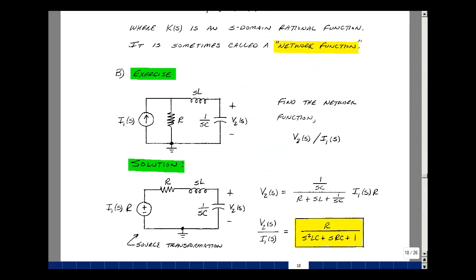Take a look at an example. Let's find the network function v2 over i1 of s for the circuit in the S domain. Lots of ways we could do that. Let's do a source transformation. I'll convert this into a voltage source whose value is i1 of s times r, with the plus sign pointing towards the top and the minus on the bottom, and then having a series resistor r with sL and 1 over sC.